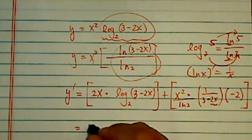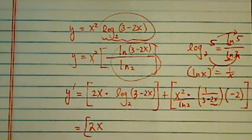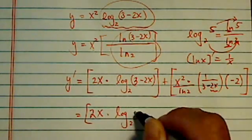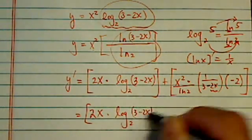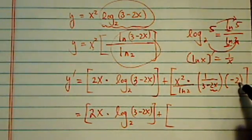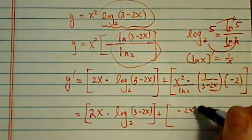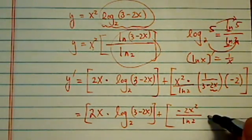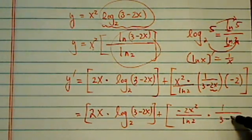Now, let's combine this one, so I have 2x log base 2 of 3 minus 2x, this does not change, plus, let's see, what do we have here? I have a minus 2x squared over natural log of 2 and then times 1 over 3 minus 2x.